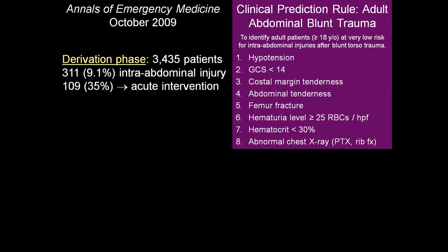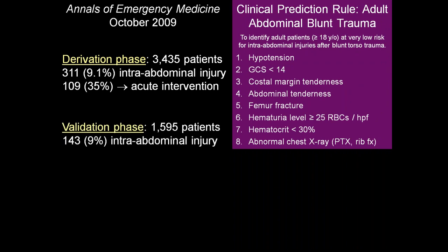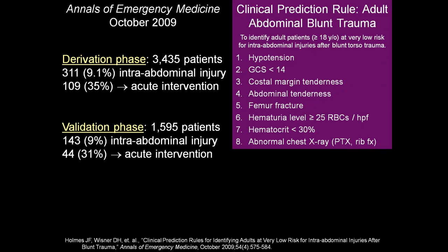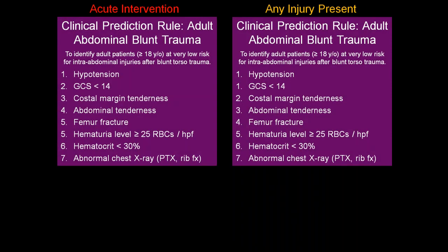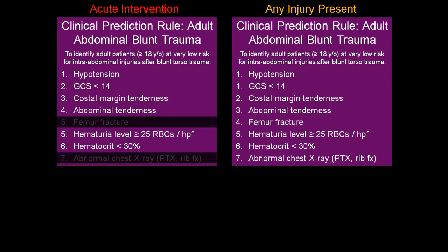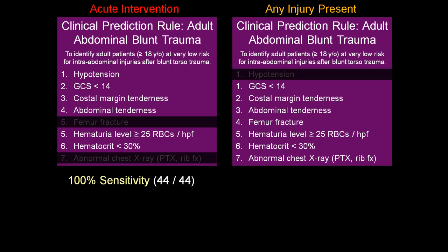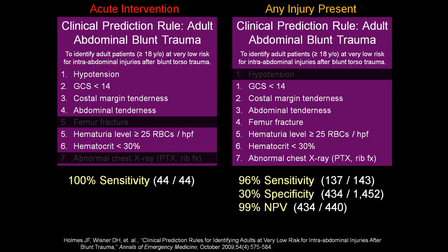The rule was developed in two phases. The derivation phase took roughly 3,000 patients, found those with intra-abdominal injury, and identified what they had in common — about a third needed an acute intervention. In the validation phase, 9% had intra-abdominal injury, and again roughly a third of those 143 patients had an acute intervention. For acute intervention, if they have any one of six criteria, the rule is 100% sensitive. For any injury present, seven criteria yield 96% sensitivity and 30% specificity, with a 99% negative predictive value.